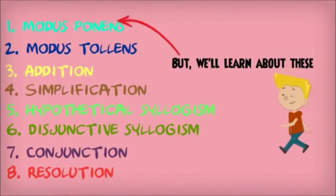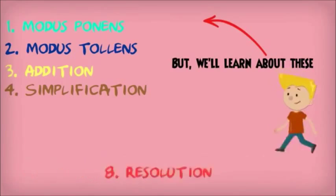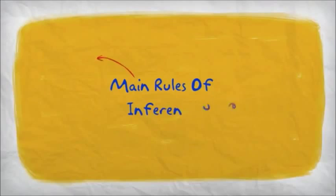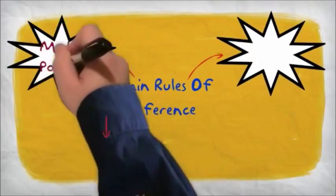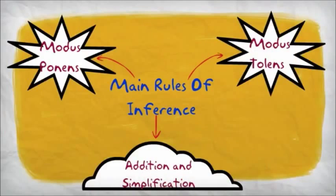But we will learn about these: modus ponens, modus tollens, addition, and simplification. The main rules of inference divide into modus ponens, modus tollens, addition, and simplification.